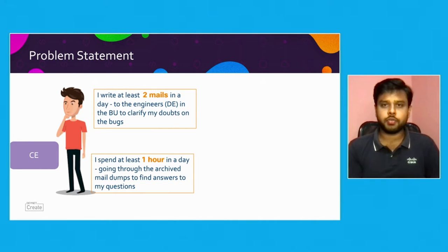When we want to understand more details about a bug, we go through previous email communications that happened between the consulting engineering team and the developer or engineering team that owns that bug. To understand the bug better, we have to go through all those previous email threads between our team and the bug developer team.